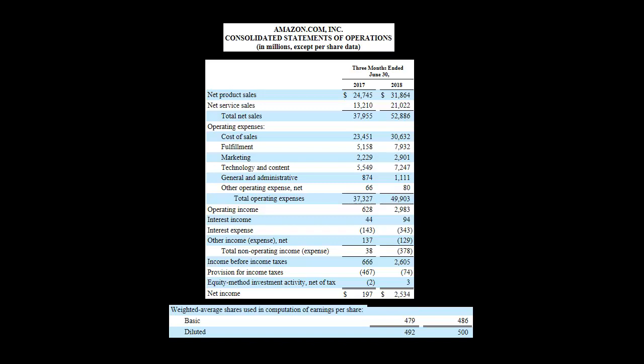In this video, I want to show you how to calculate the earnings per share and diluted earnings per share for Amazon.com for the second quarter of 2018. So I've got the income statement here for Amazon, the quarter ended June 30th, 2018, and then it also has the same quarter from the year before. I'm just going to focus on 2018.